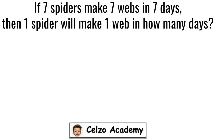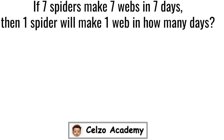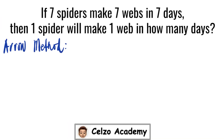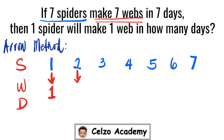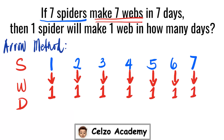Now let's solve the problem using two methods. For the first method — the arrow method — the problem involves spiders, webs, and days. There are seven spiders, and seven spiders make seven webs working at the same rate. This means that each spider can make one web.